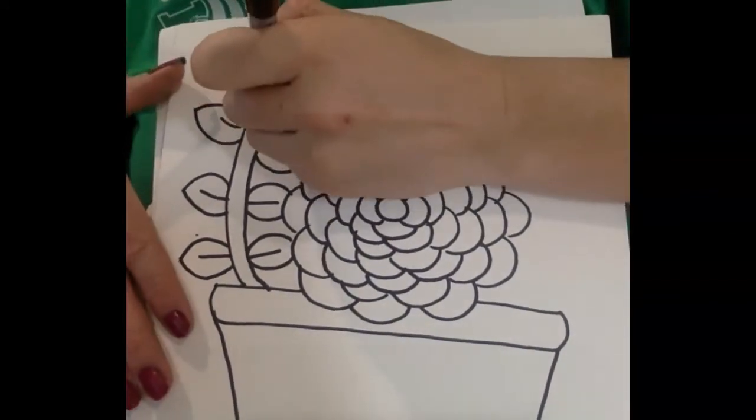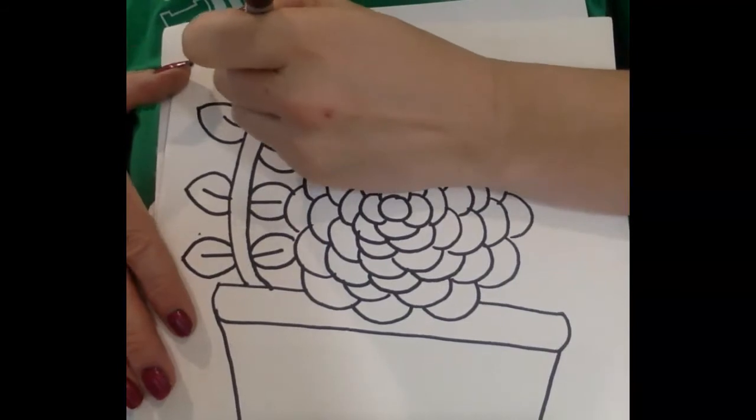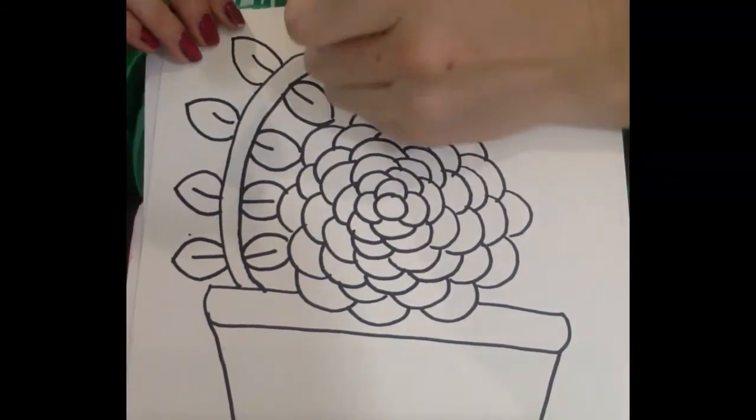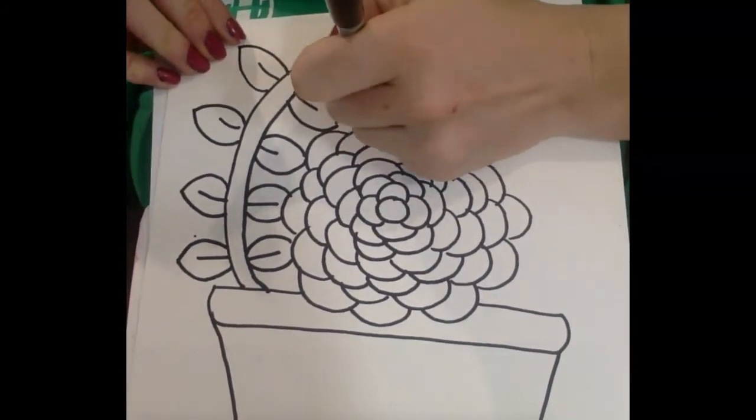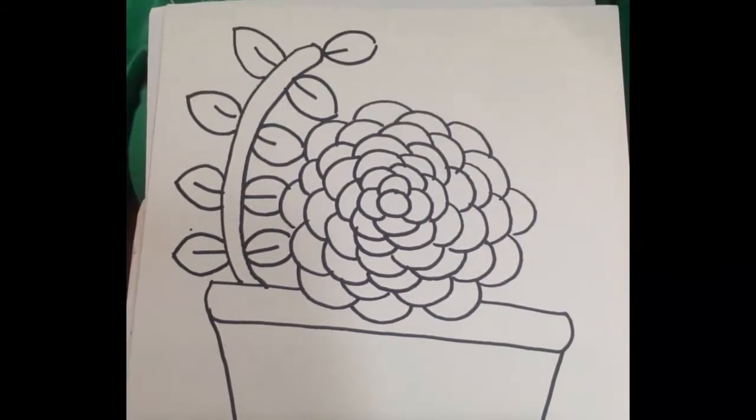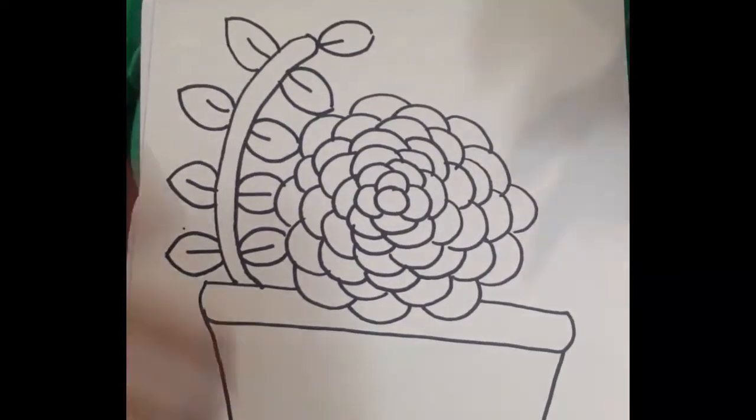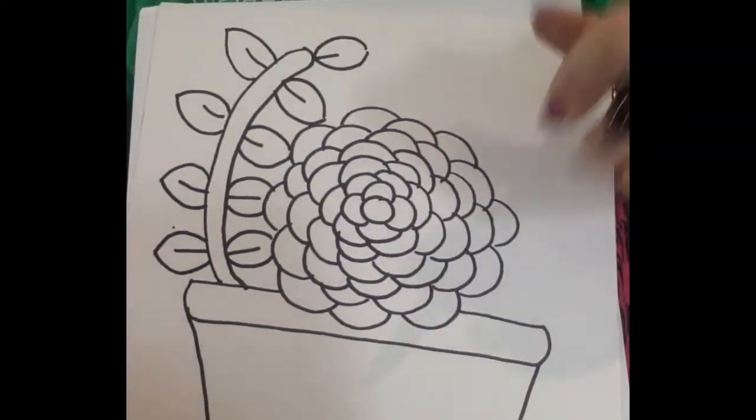So that one's looking good. And then we'll do one right on the end here. So there we go. Looking good. We made our little plants. I have a little bit of space right here on this side. So I want to fill that in.